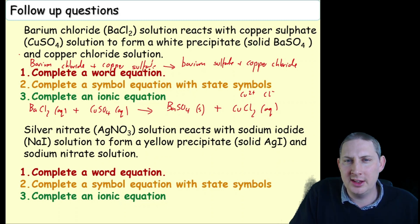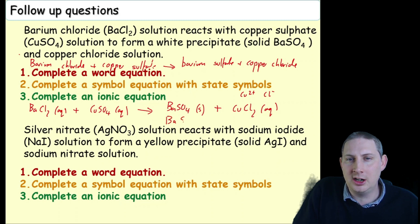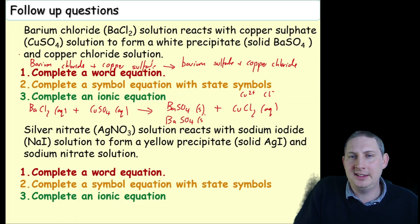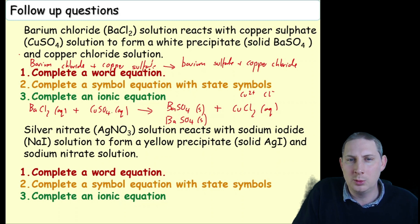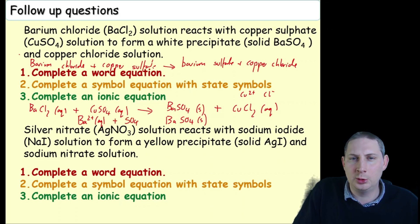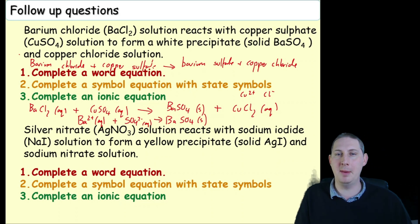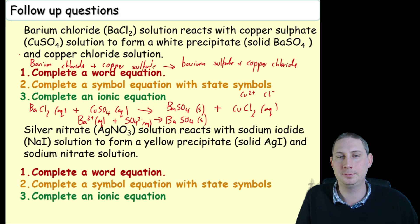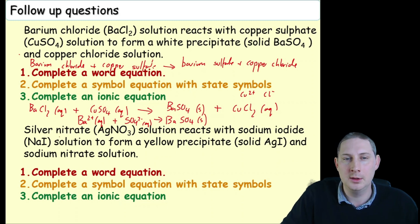To write the ionic equation, start with the precipitate — barium sulfate — and identify what goes into making it. Barium is in group 2, so it's always Ba²⁺; sulfate is SO₄²⁻. Therefore the ionic equation is: Ba²⁺(aq) + SO₄²⁻(aq) → BaSO₄(s).